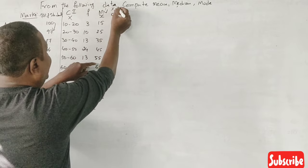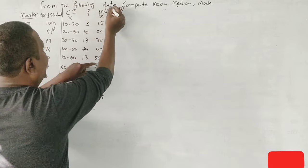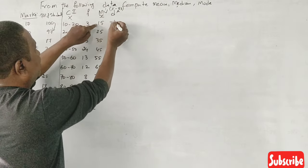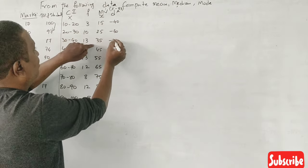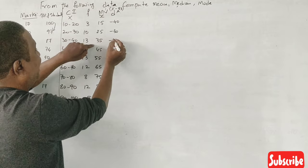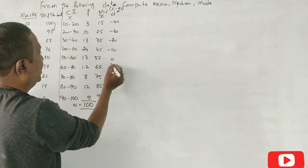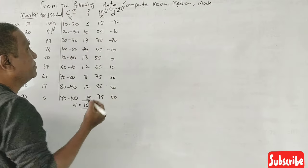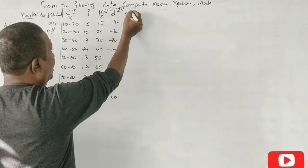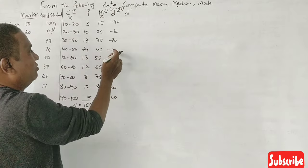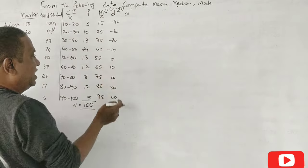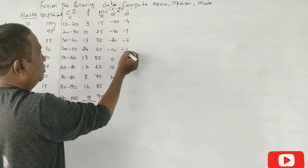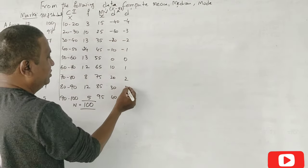So X minus A, that is 55. Correct? 15 minus 55 is minus 40, minus 30, minus 20, minus 10, 0, plus 10, 20, 30, 40. Correct? This is D dash model. D dash model is 10. 40 and all numbers divided by 10. Minus 4, minus 3, 2, 1, 0, 1, 2, 3, 4.